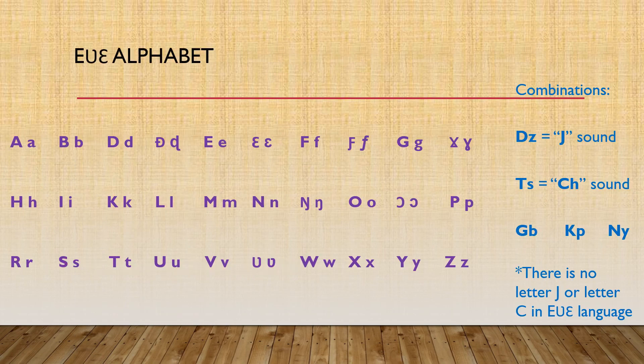Here is the Ebe Latin alphabet. This alphabet is made of 30 letters and five combination letters. Please review video number two for a lesson on the pronunciation if you need to. Remember that there is no letter J or letter C in this alphabet.